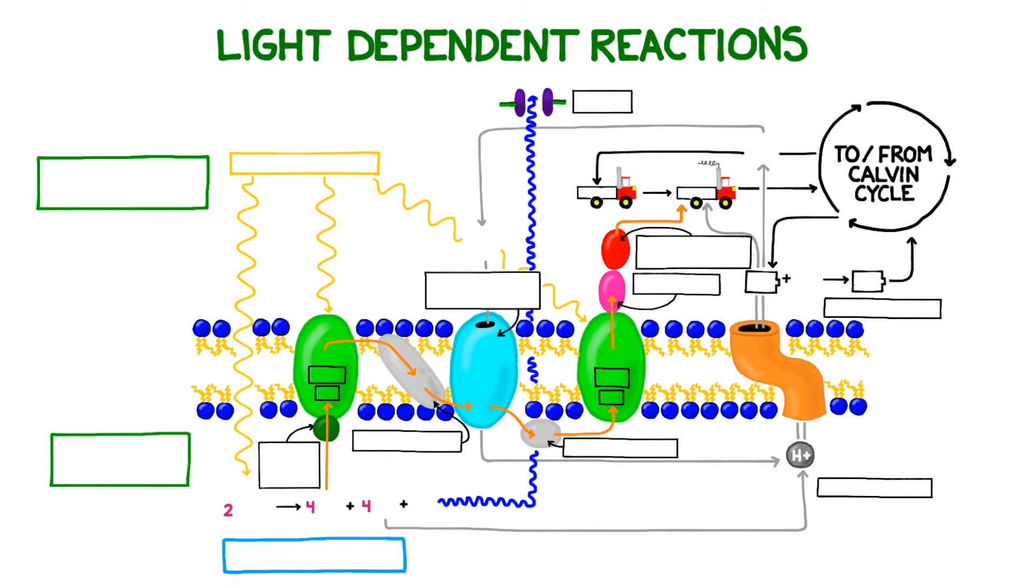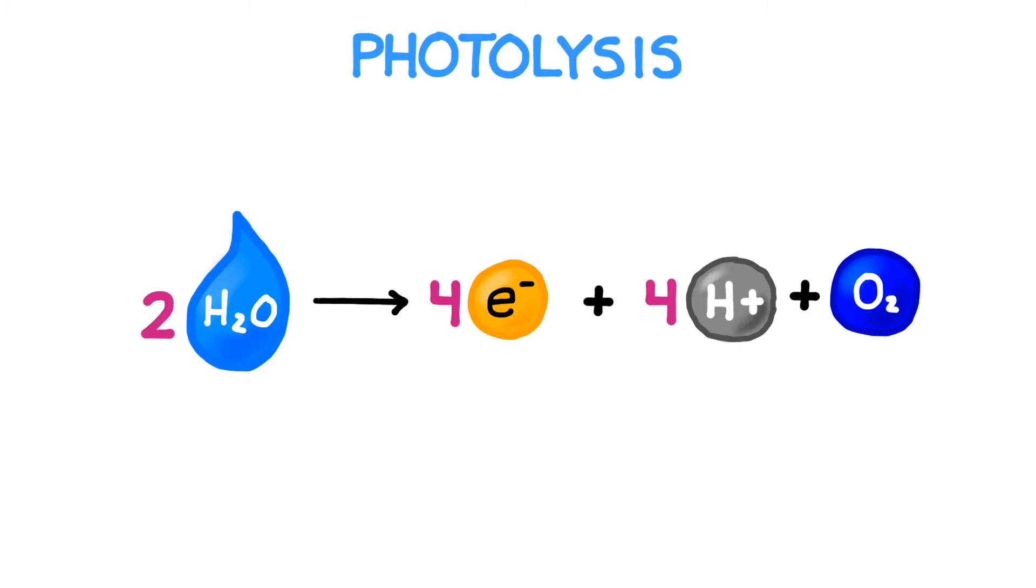The first step in the light-dependent reactions is photoexcitation. Photons of light kick off a process called photolysis. This is a light-induced splitting of water that produces three important components: oxygen, protons, and some low-energy electrons.